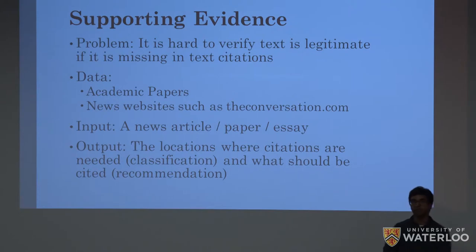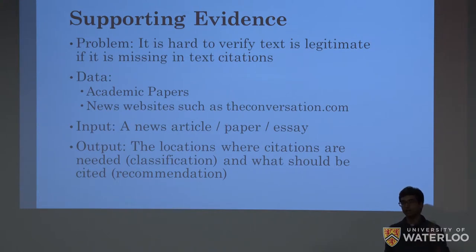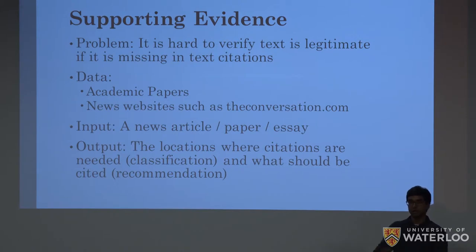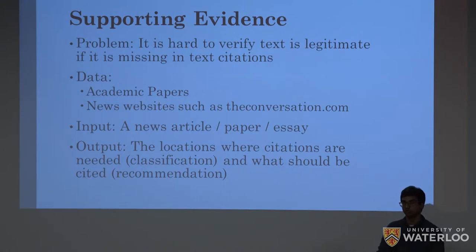One of the big requirements for the fact-checking approach I described is supporting evidence. On its own, a classifier given just a claim cannot determine whether it's true or false — it can't know every possible fact. It needs other information it can trust to give it context about the situation. But if you look at most news articles today, they don't come with in-text citations, so you couldn't just run an AI fact-checking approach directly on them. Inserting these in-text citations for supporting evidence is going to be a really important step in stopping the spread of misinformation online.